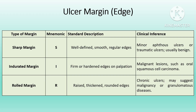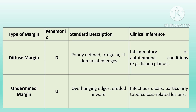An ulcer can have a sharp margin, as found in aphthous ulcers with well-defined borders. It may have an indurated or hardened margin suggesting possible malignancy, as in oral cancers. Margins may be rolled out, indicating underlying pathological conditions often seen in chronic ulcers. Diffuse margins, distributed irregularly, are seen in infections or autoimmune conditions. Undermined margins are visible in underlying infections like tuberculosis. The mnemonic 'SIR DU' can help recall key margin types and their clinical implications.